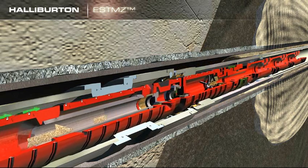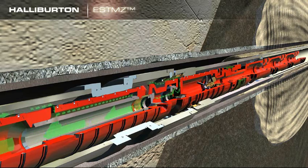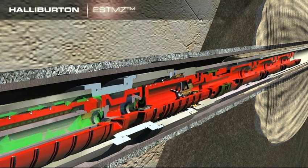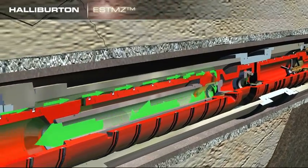Excess proppant is reversed out by applying annular pressure and raising the service tool to the initial reverse position and then to the full reverse position. Circulation continues until all proppant is removed from the work string.